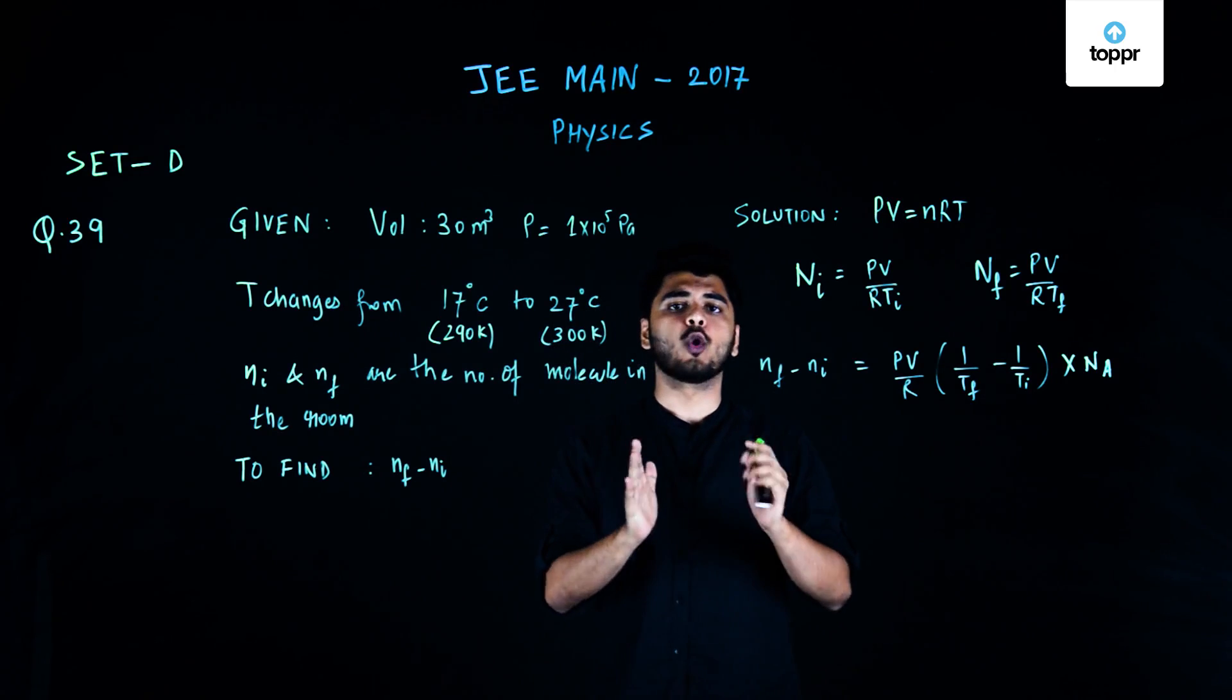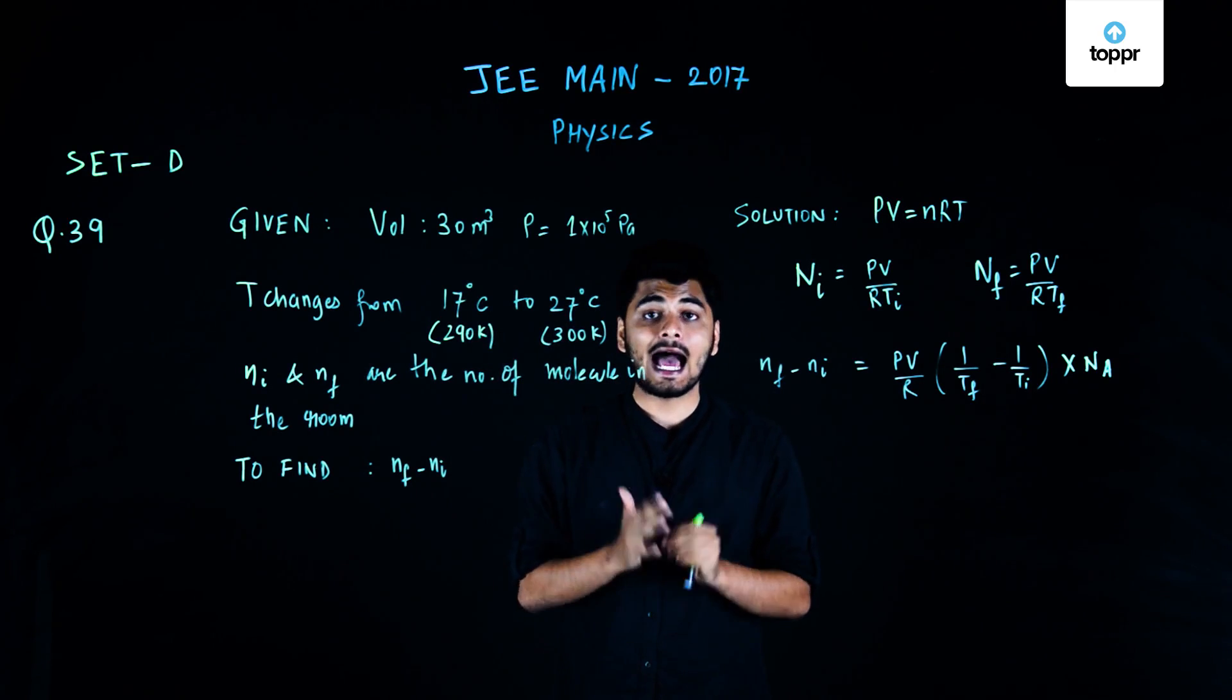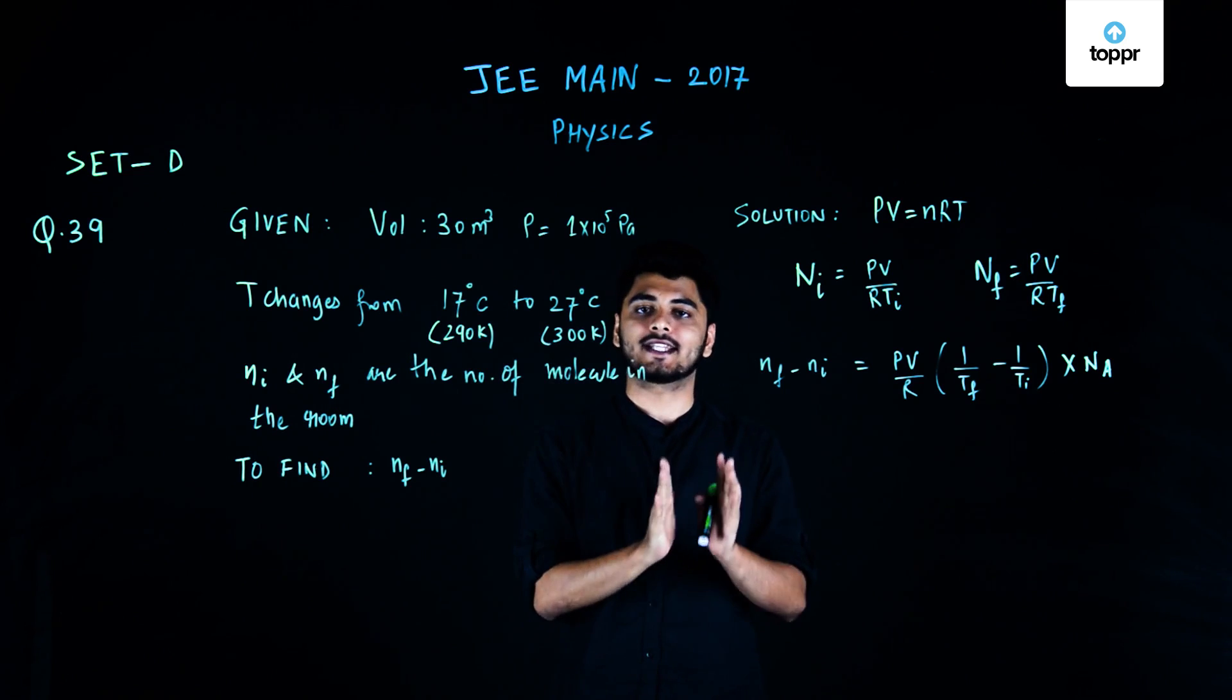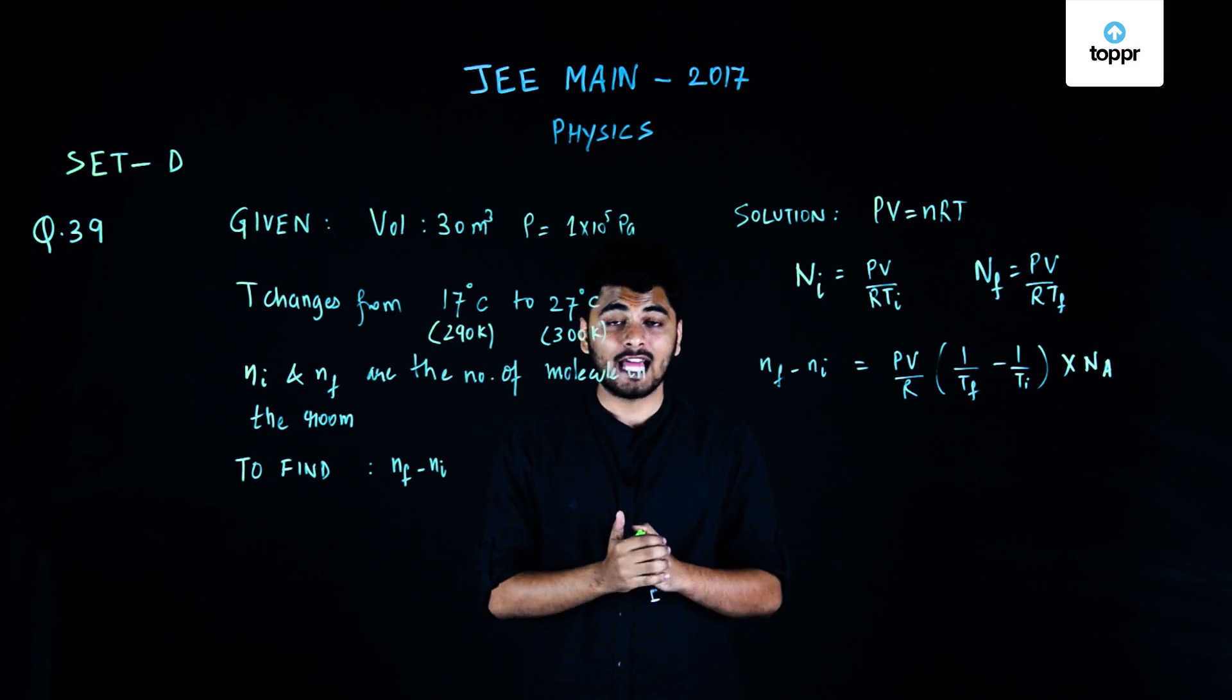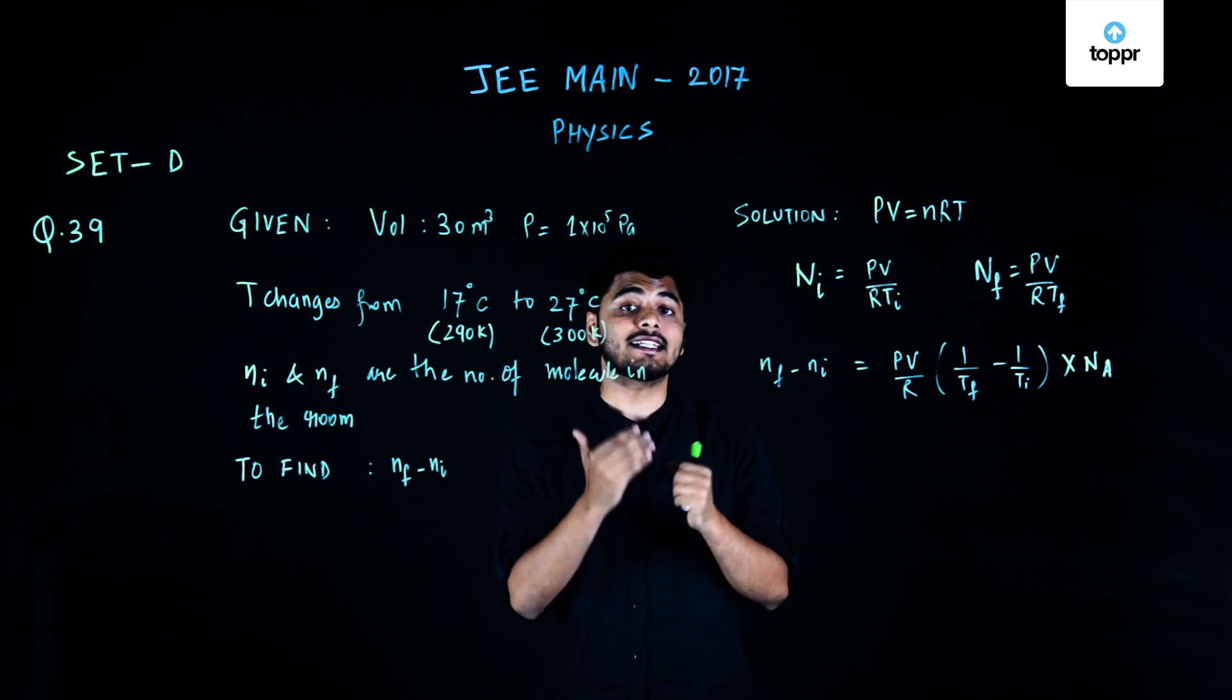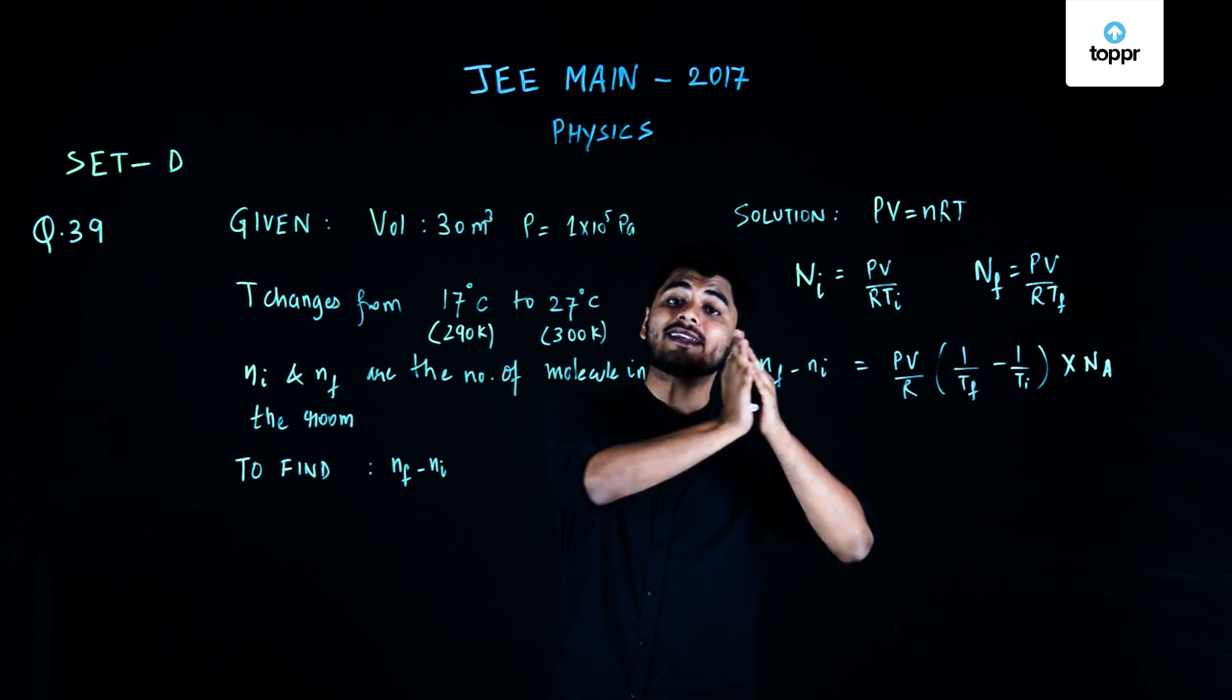In this question we have been given an open room, the volume of which is equal to 30 meter cube and the atmospheric pressure in the room is equal to 1 into 10 to power 5 Pascals. Now, it has been said that due to sunshine, that is due to heating of the room, the initial temperature of room which was 17 degrees Celsius was increased to 27 degrees Celsius.